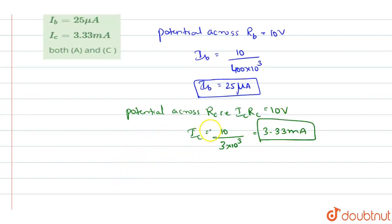So, if you know the collector current and the base current, you can always calculate the current gain and current gain beta will be equal to IC by IB. IC is 3.33 into 10 power minus 3, whereas IB is 25 into 10 power minus 6. And if you simplify it, you will get it as 133. So, the current gain is 133.